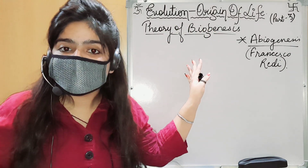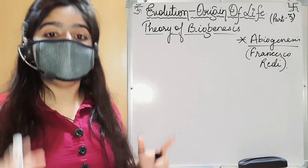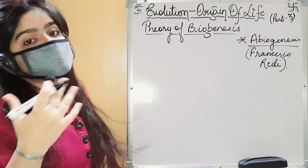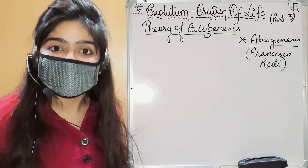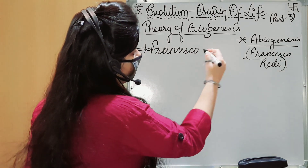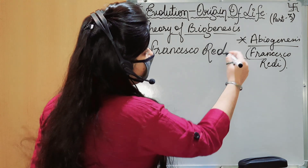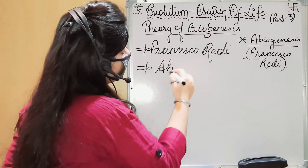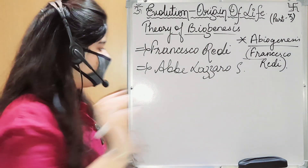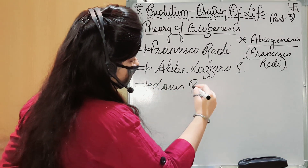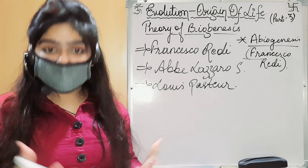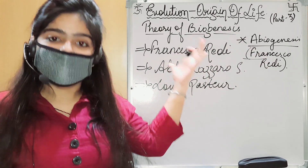The theory of biogenesis was proposed by three scientists. Three people contributed to this theory. The first was Francisco Redi, the second was Abbe Lazzaro Spallanzani, and the third was Louis Pasteur. These three scientists helped in proposing the theory of biogenesis.